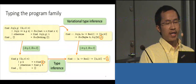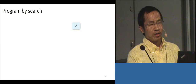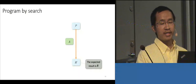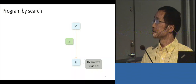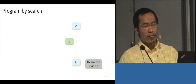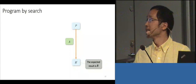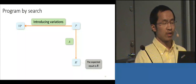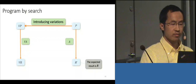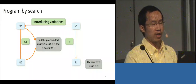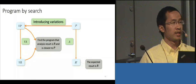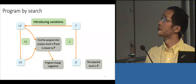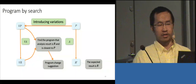This is a static view of the variational program. There is also a dynamic use called program by search. Suppose we are given a single program P, we apply analysis A, and get result R prime. But suppose the intended result is R, meaning the analysis result is incorrect. The question is: how do we change program P to get result R? We introduce variation into the original program to create a variational program, apply variational analysis to get a variational result, and then decide which program is closest to P such that when A is applied the result is R. This gives us suggestions on how to change the original program P, and we have used this idea to develop the technique called type error debugging.